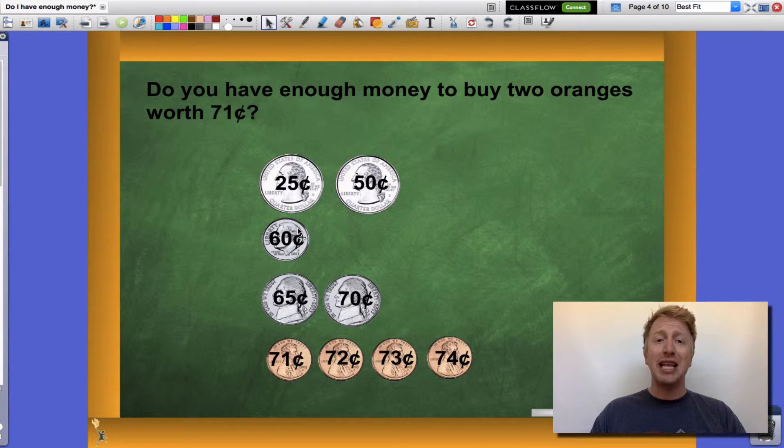When I add a dime to that worth 10 cents, I'm all the way up to 60 cents. I do have two nickels each worth 5 cents each, so I go from 60 cents to 65 cents to 70 cents.